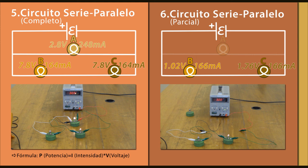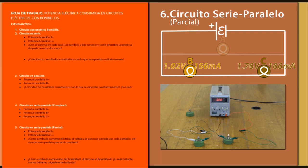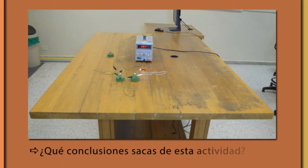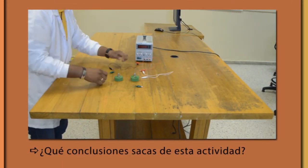¿Cómo cambia la iluminación del bombillo B al eliminar el bombillo A? ¿Es más brillante, menos brillante o igualmente brillante? ¿Qué conclusiones sacas de esta actividad?